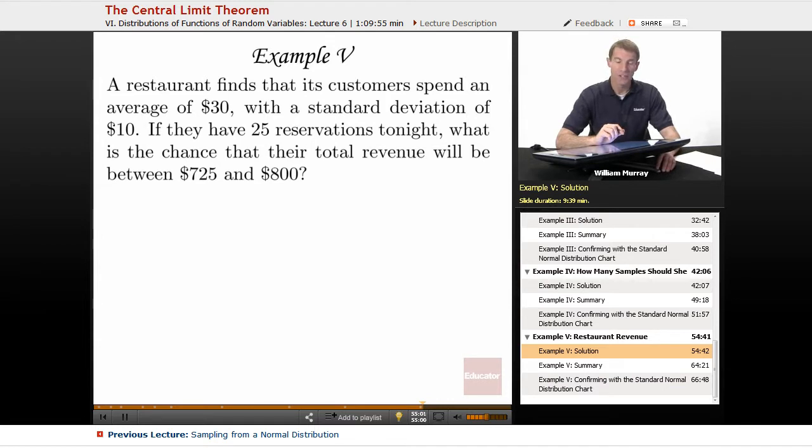But they have a standard deviation of $10, which means maybe if somebody just has an appetizer and a drink, maybe they only spend $20. Maybe if they really go for the full menu and have drinks and dessert and a few different extras, then they're going to end up spending $40 or even more.